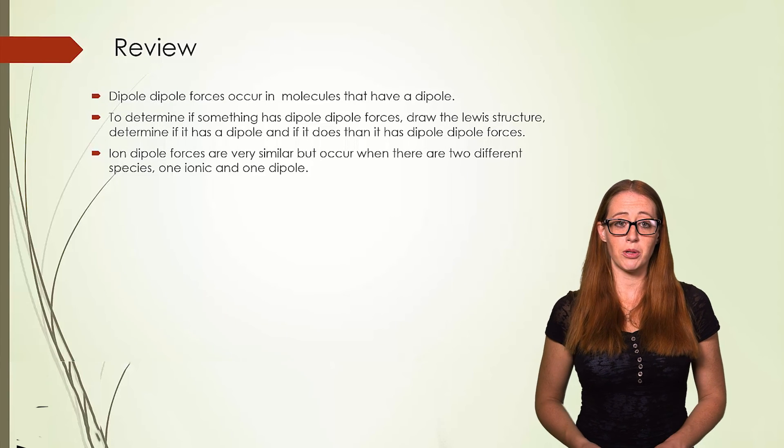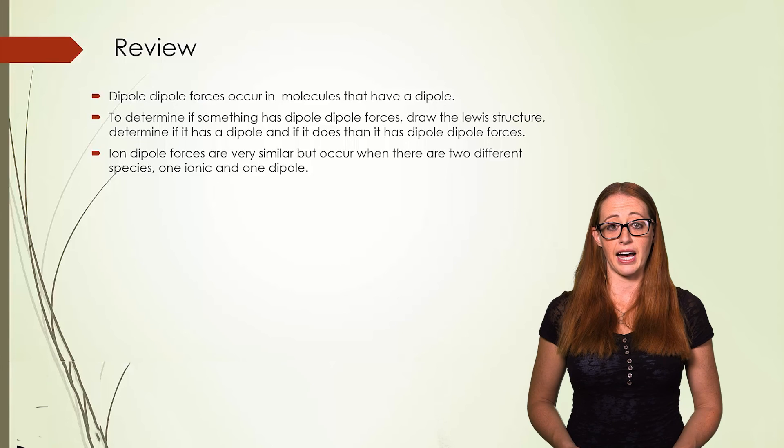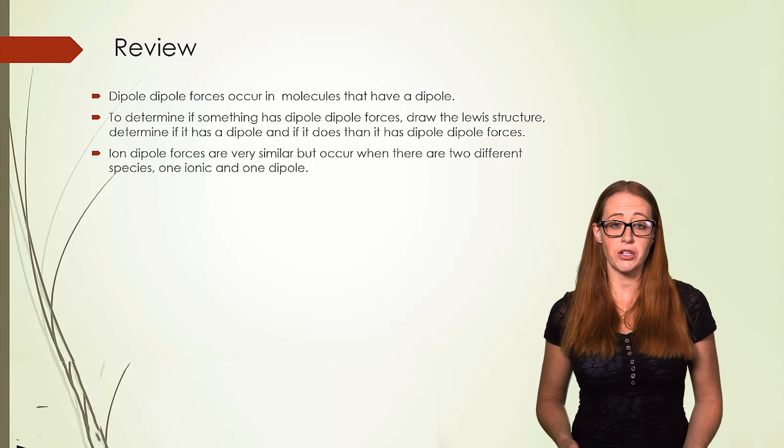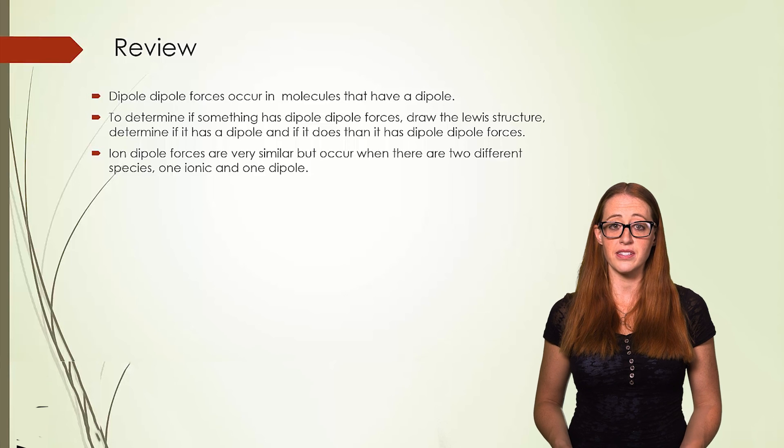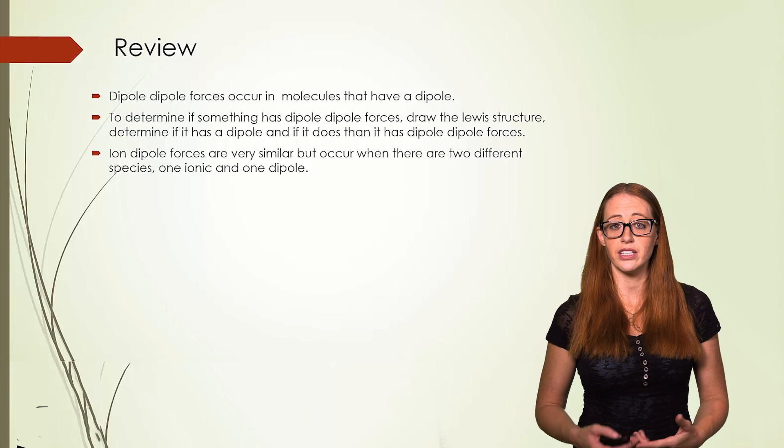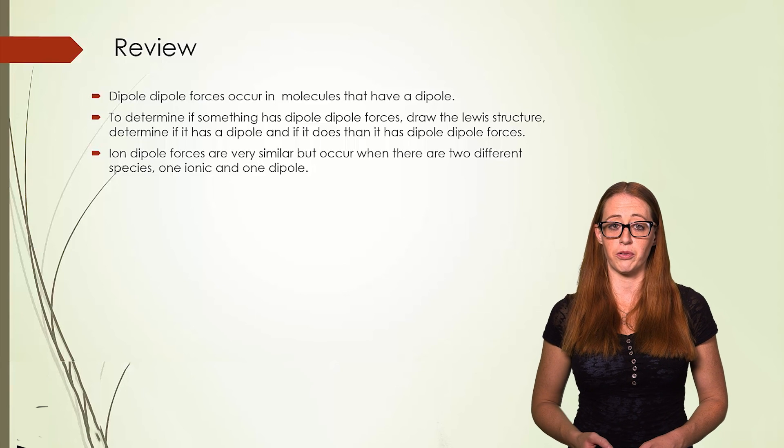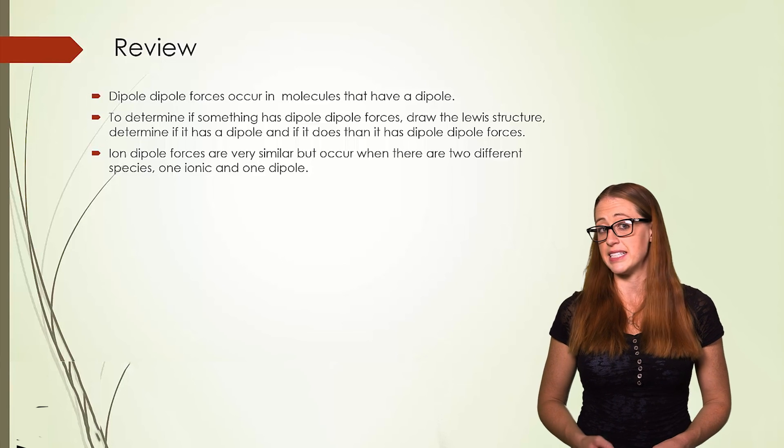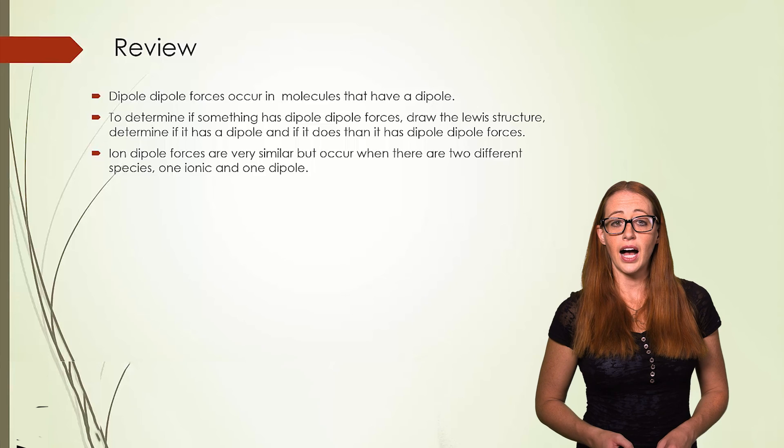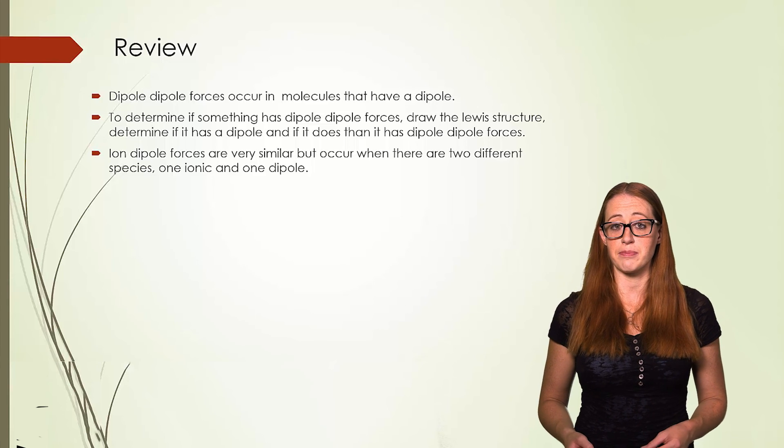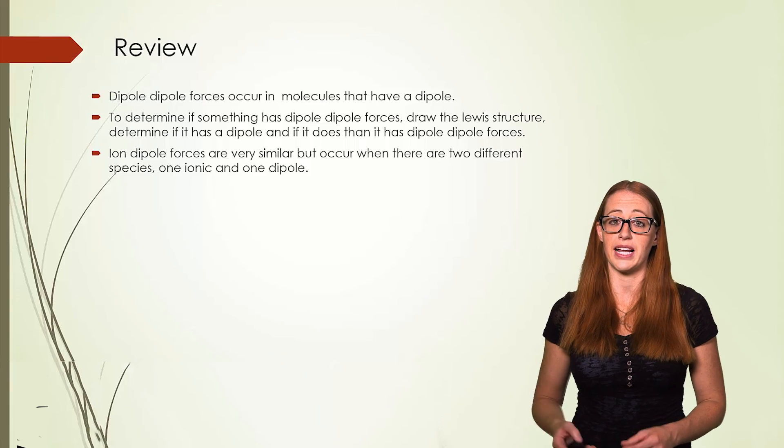In review, dipole-dipole forces occur in molecules that have a dipole, or in other words, in polar molecules. To determine if something has a dipole-dipole force, you must first draw the Lewis structure, decide if it is polar, and if it is polar, then it has dipole-dipole forces. If it is not polar, then it does not. Ion-dipole forces are very similar, but occur when there are two different species, and one is ionic, and one has a dipole.